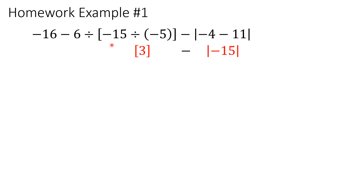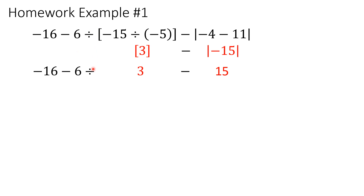Negative divided by a negative is positive, so negative 15 divided by negative 5 gives positive 3. The absolute value stays with the expression. Then we take the absolute value of negative 15, which is 15. Everything else stays the same — we bring down the 3, the minus sign, and replace the absolute value with 15. Now there are no more parentheses or exponents, so we move on to multiplication and division.